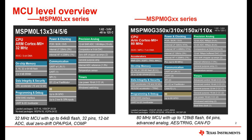From a portfolio perspective, the 32 megahertz MSPM0 L series features one 12-bit ADC module with a 1.68 mega samples per second sampling speed, whereas the 80 megahertz MSPM0 G series features two 12-bit ADC modules with a 4 mega samples per second sampling speed.